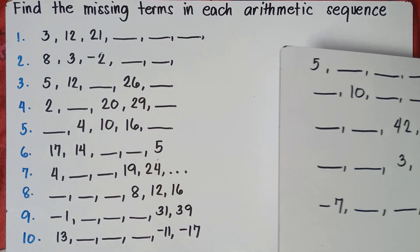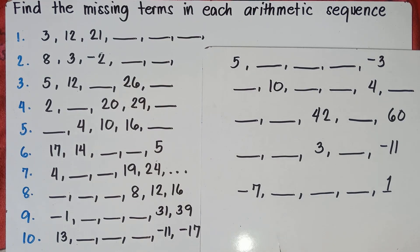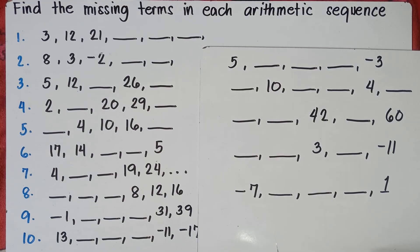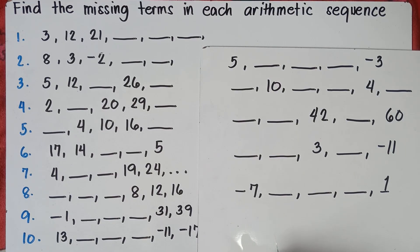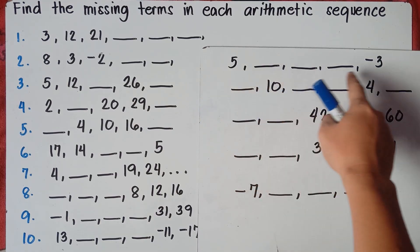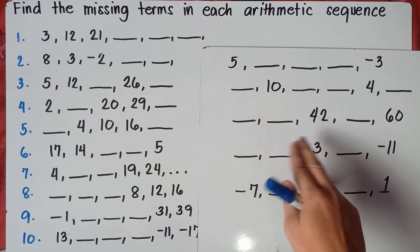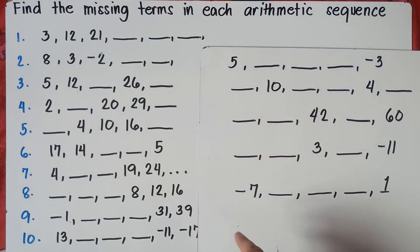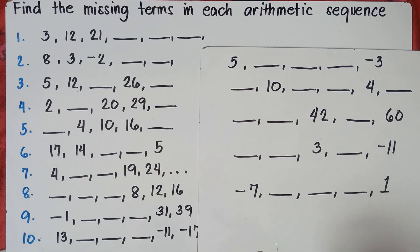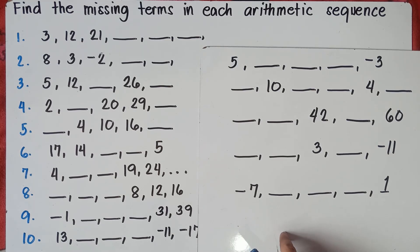But if you have examples like these — where you don't have two consecutive terms — that will be the next part of our video. For instance, you have the first term and the last term only. The same applies to numbers 2 and 3. So what will you do in those cases? I will put the link in the description down below on how to answer this one.